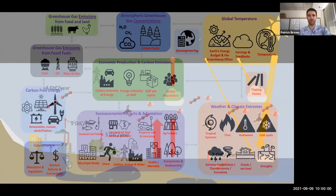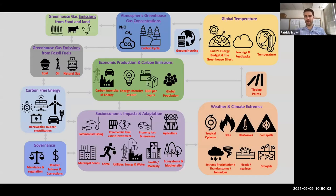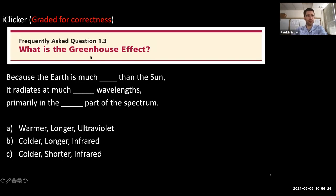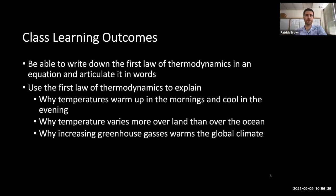In my two-dimensional topic diagram I am up in the upper right, kind of following CO2 into the atmosphere — some of it stays in the atmosphere, and then that affects the energy budget and global temperature. We are going to be talking more about the greenhouse effect and how it affects temperature through the lens of what I'm going to be calling the first law of thermodynamics.